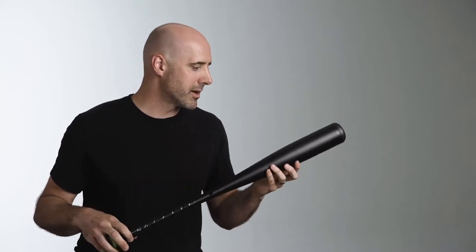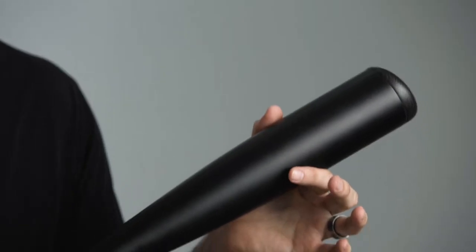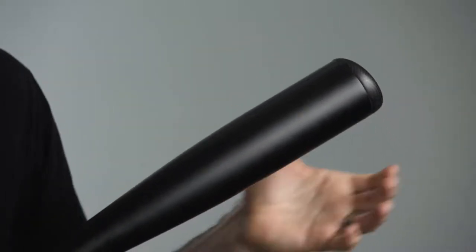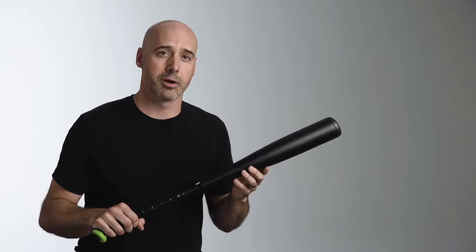So the USA Standard has given us the ability to make a youth bat with a two and five-eighths inch barrel. It's also changed the performance limitations of the barrel itself.